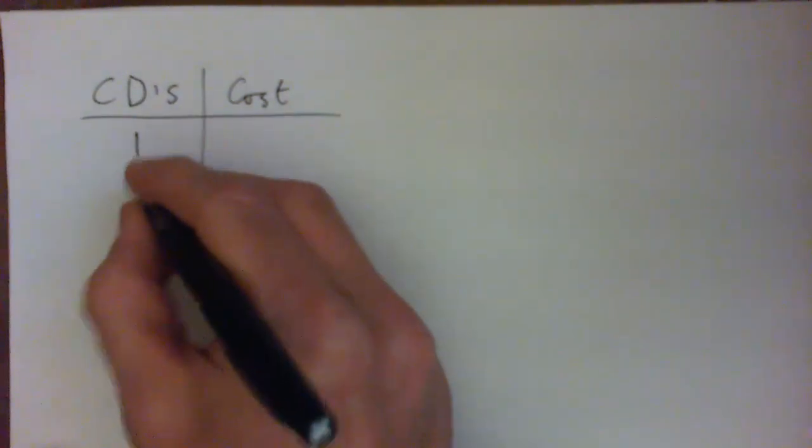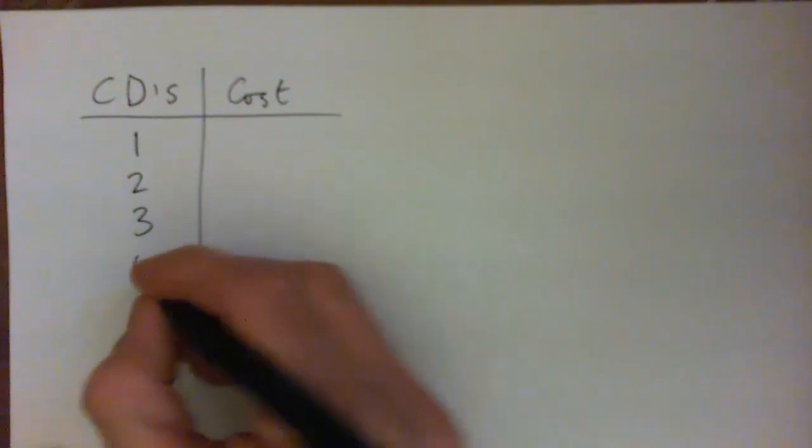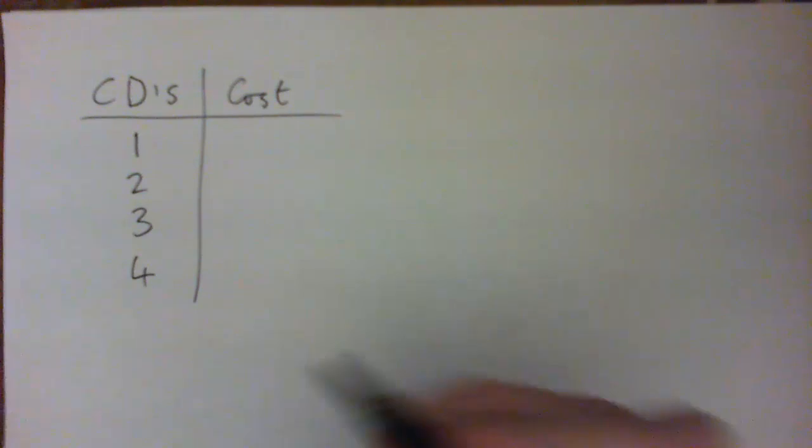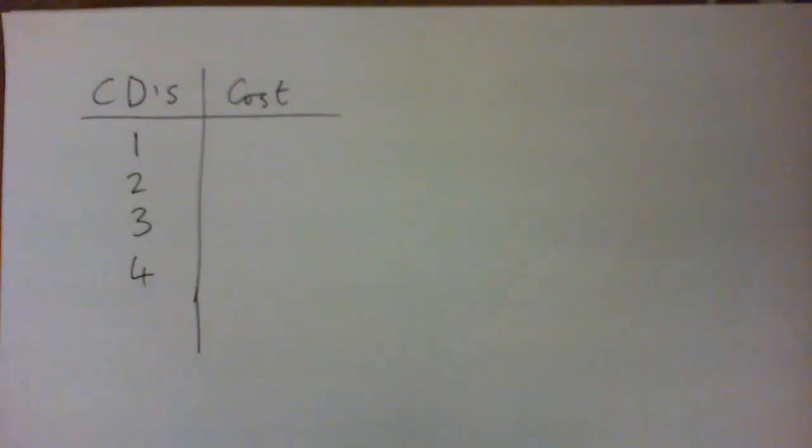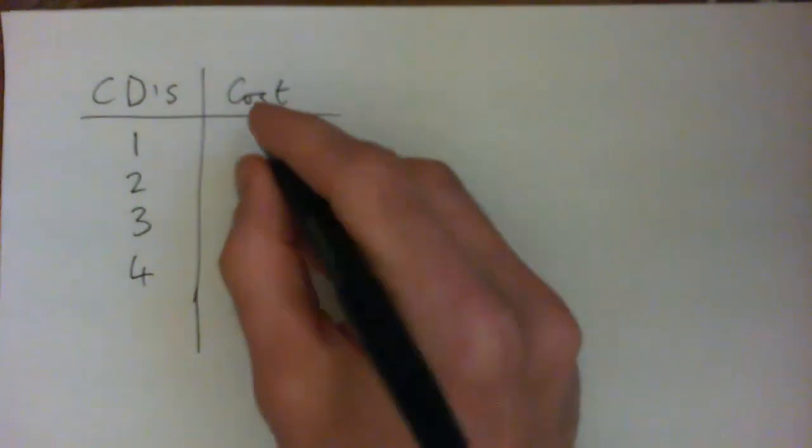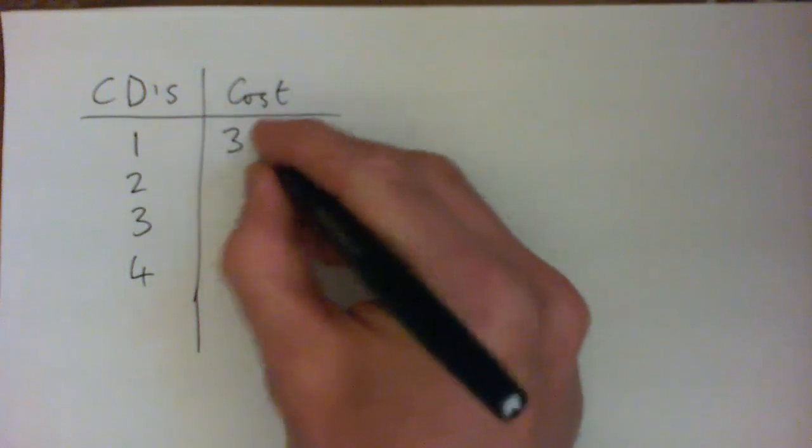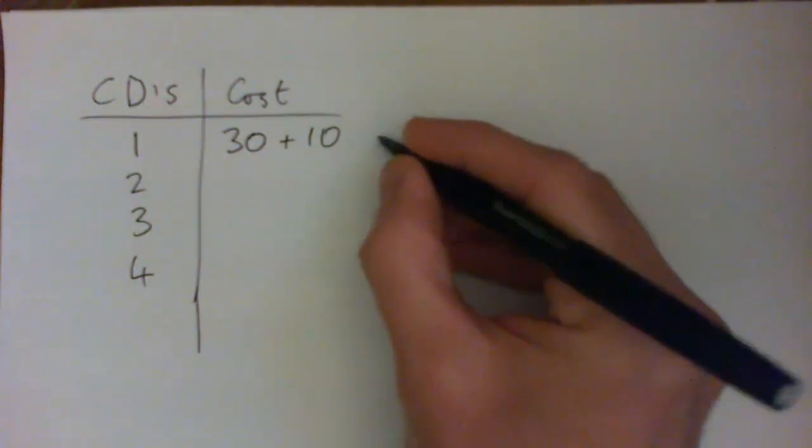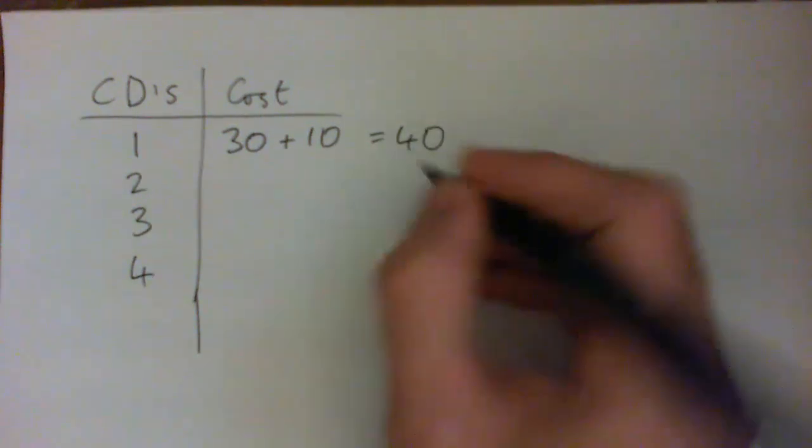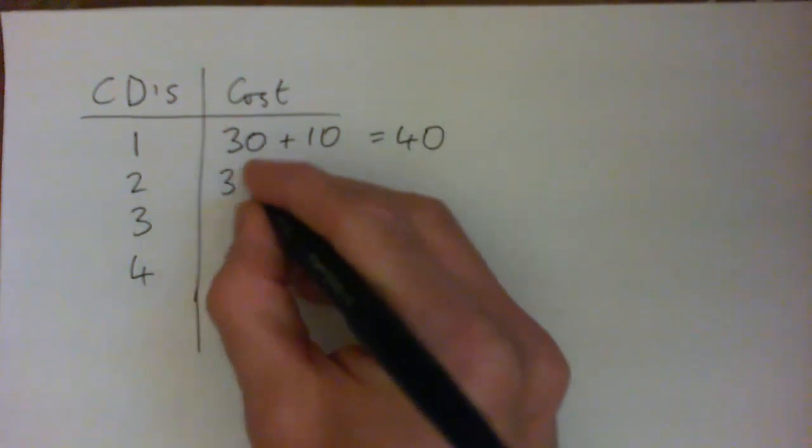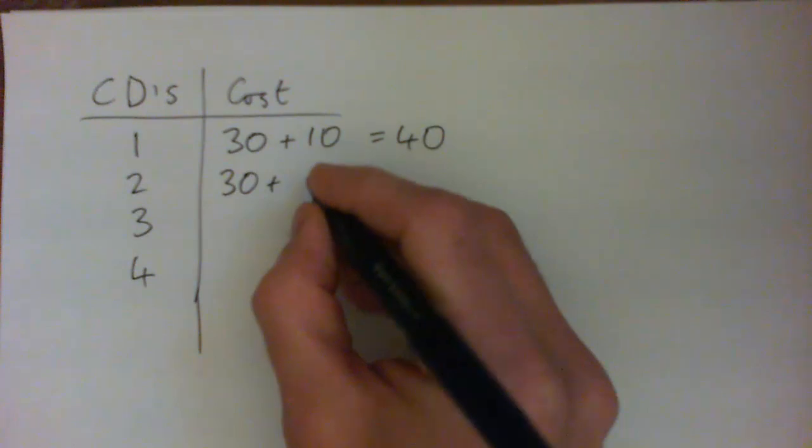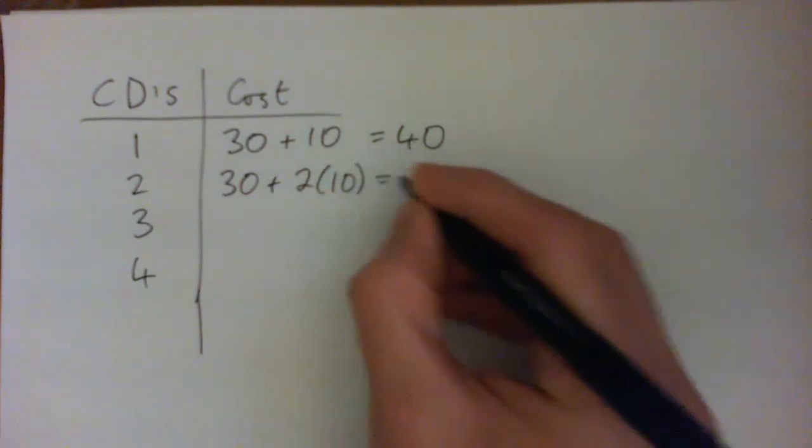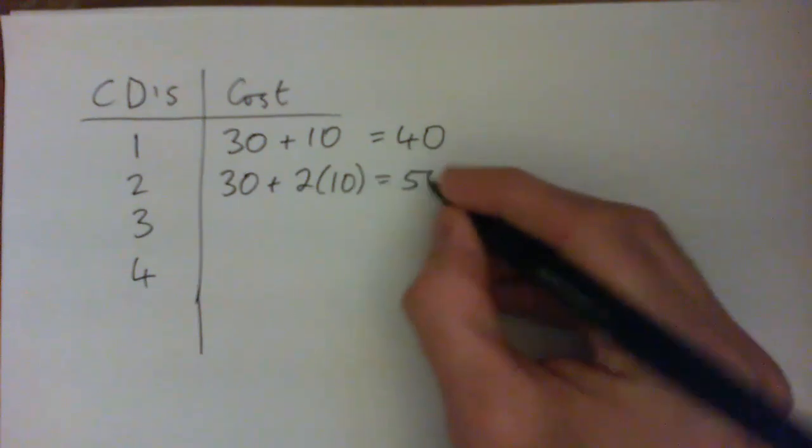Anyway, so for one CD, we're going to try to calculate the cost for one, two, three, four CDs, just to get an idea for the formula. So one CD would be $30 plus $10 for the one CD, so it would be $40. That make sense? So two CDs would be $30 plus 2 times 10, so $50 and so on.